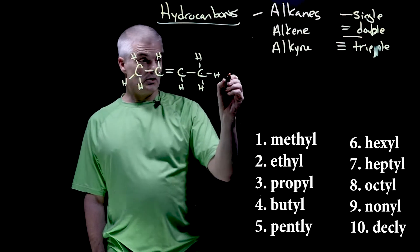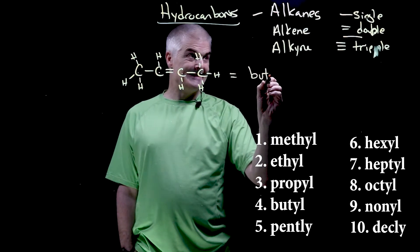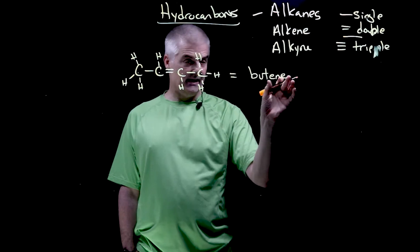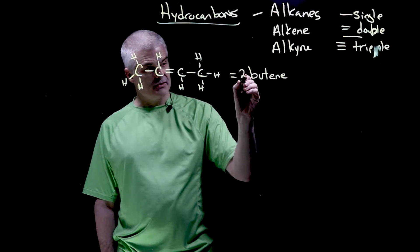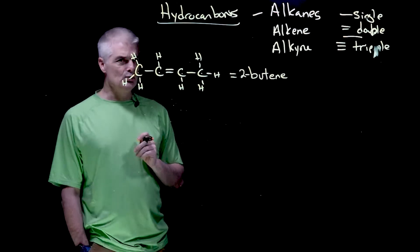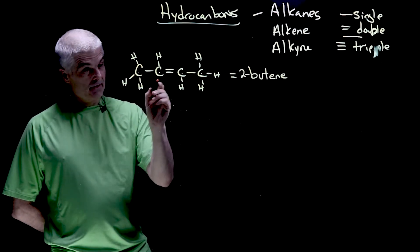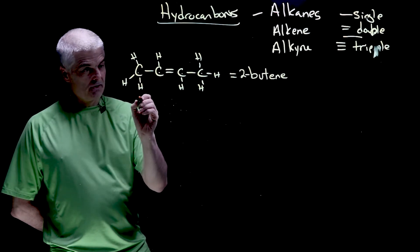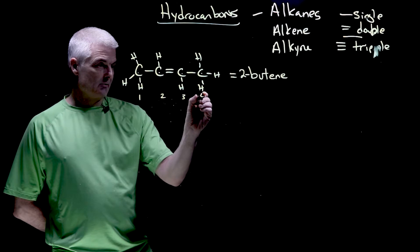So four, if you recall, is butyl, but this will be butyne. Not butyne, but butyne. And actually, you know what we have to say? We'll say two dash butyne. Now why do you think I said two dash butyne? Because what we do is we have to identify where the double bond is. The double bond is on carbon number two. Carbon number one, carbon number two, carbon number three, carbon number four.